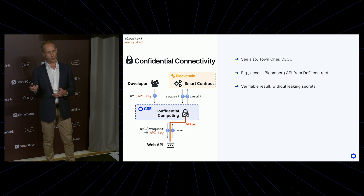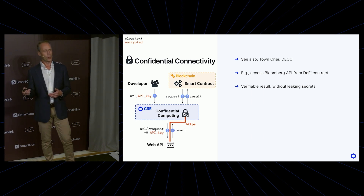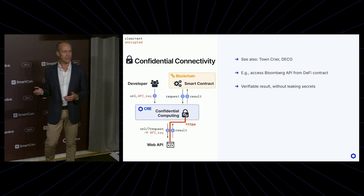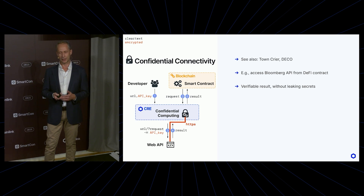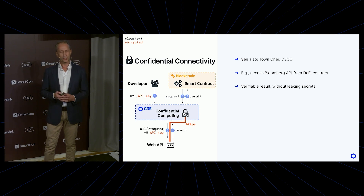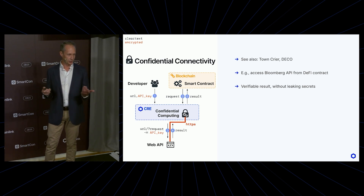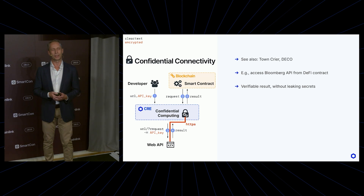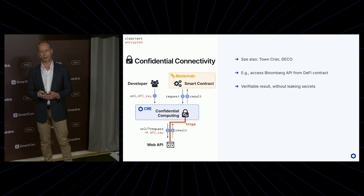An HTTPS tunnel gets set up from inside the enclave to the Bloomberg API, and the enclave can read the result and forward it back on chain with an attestation on top of it. So this way you get a verifiable result without leaking any of the secrets. We call that the confidential connectivity capability — a generic tool that we can use for many other purposes.